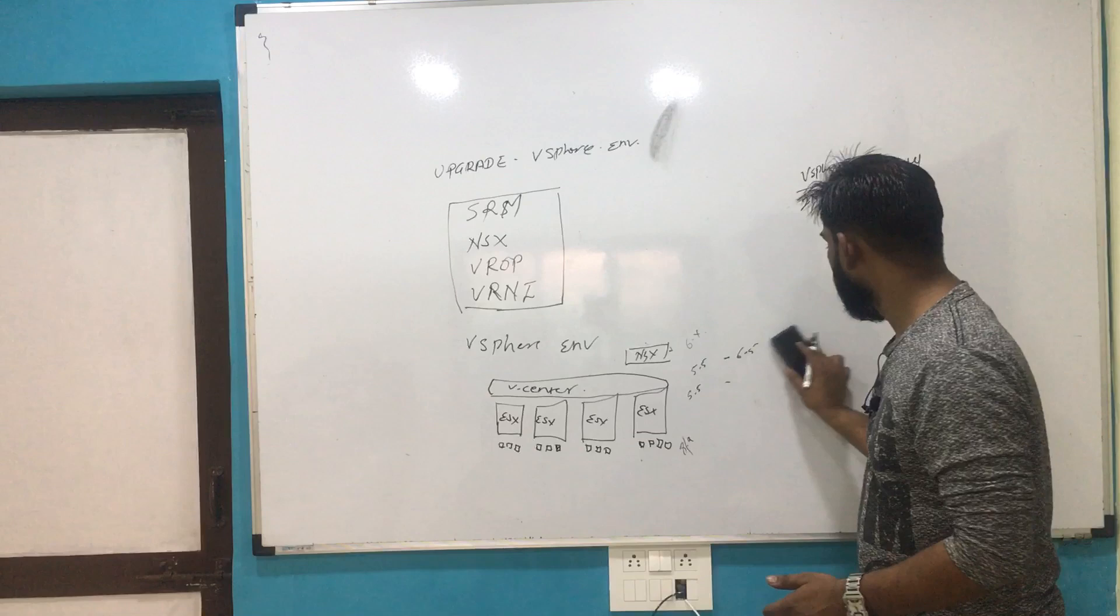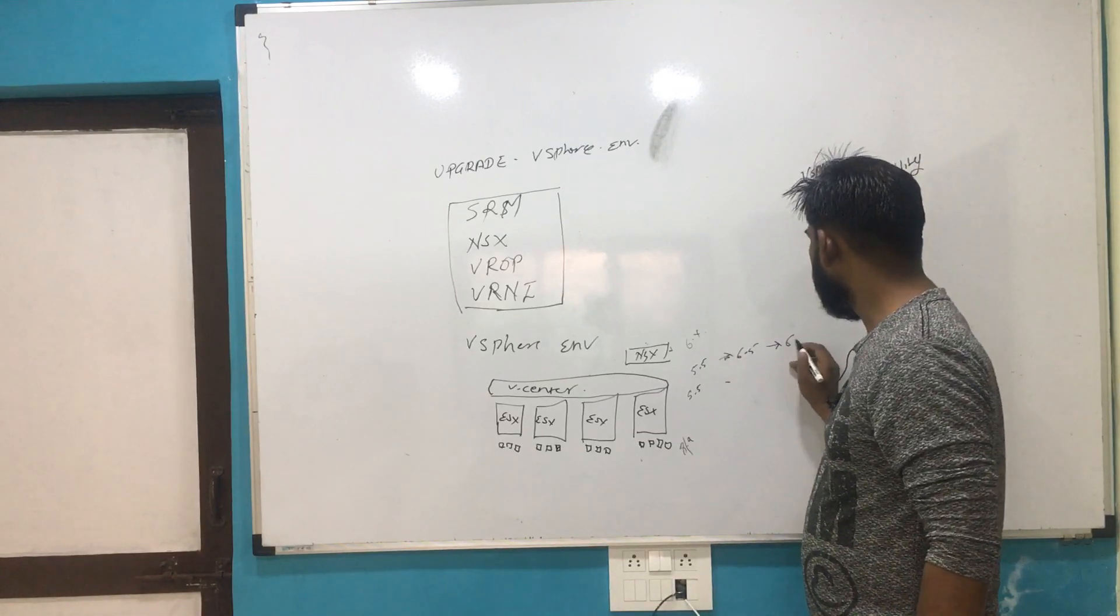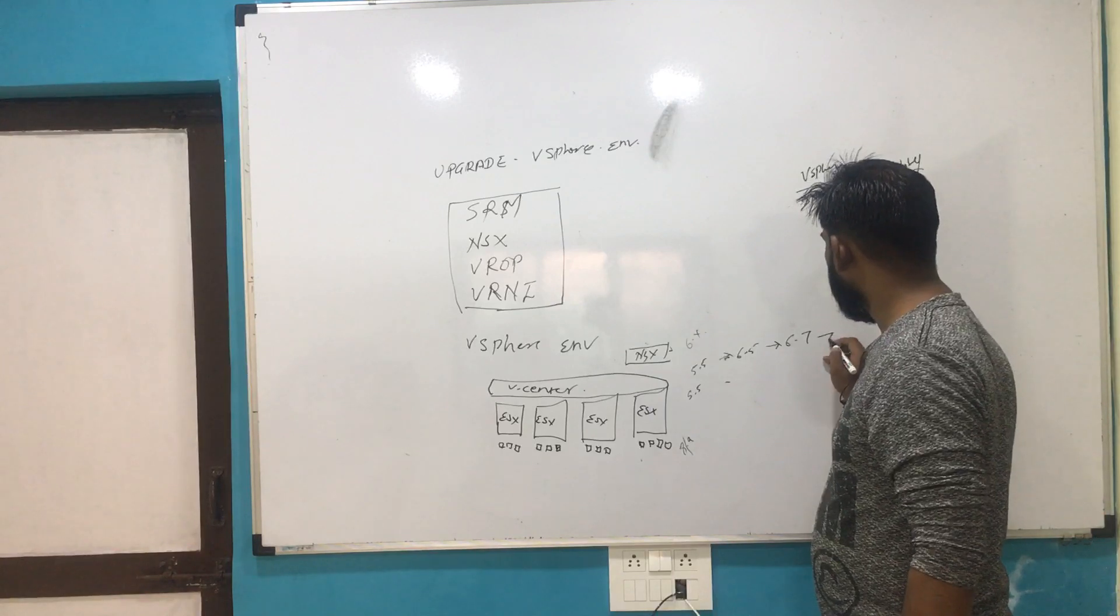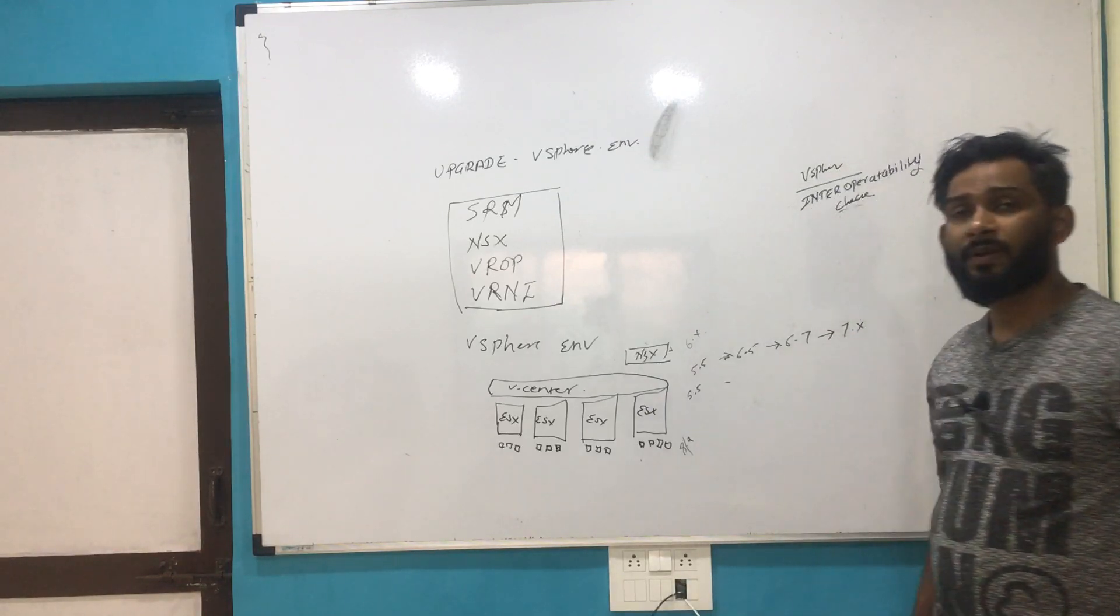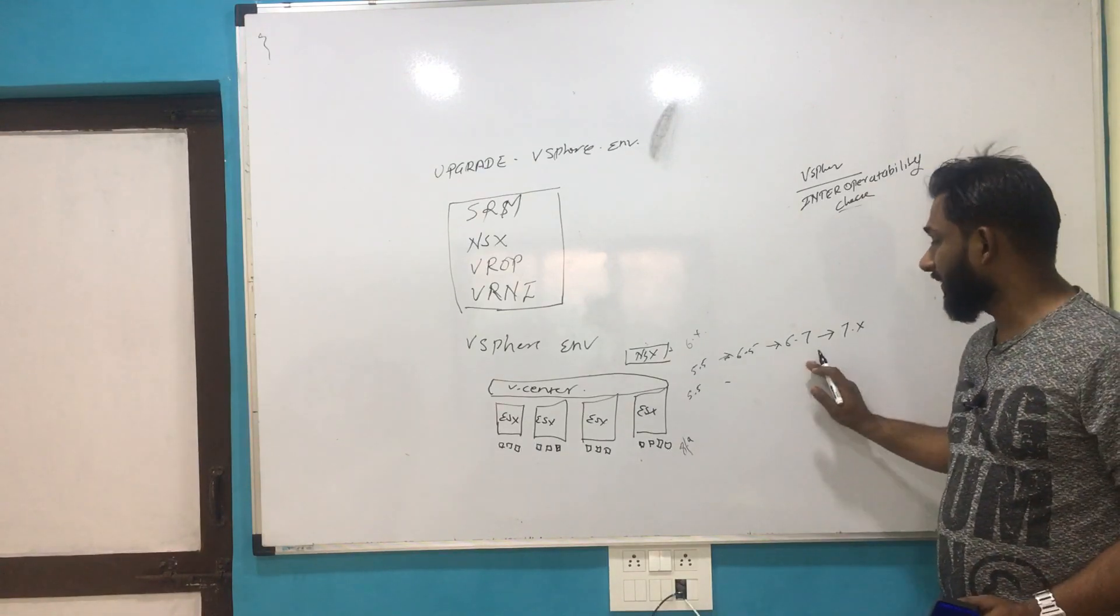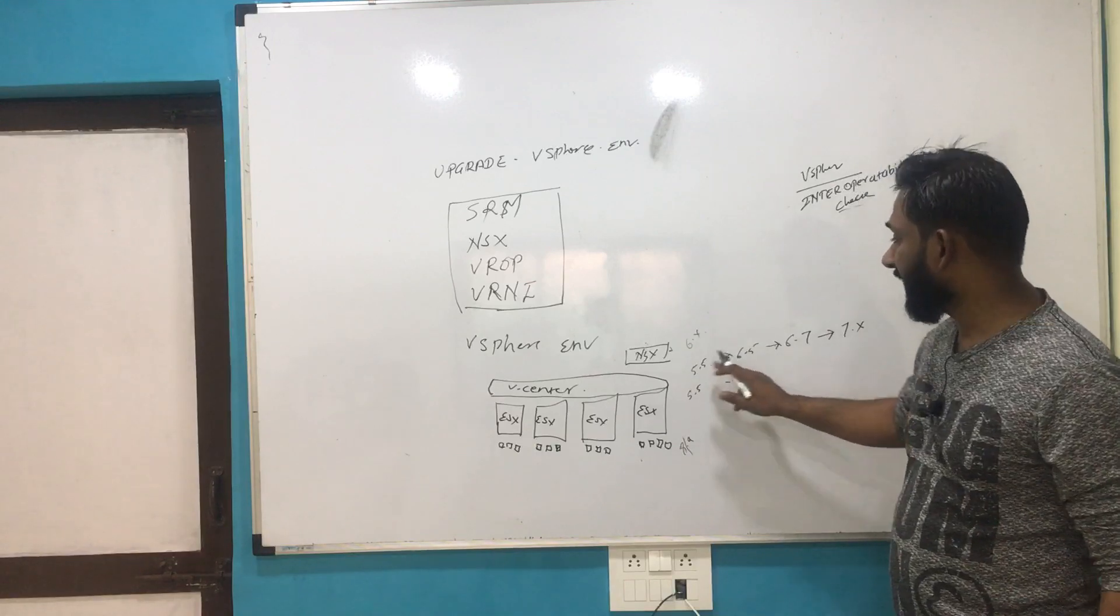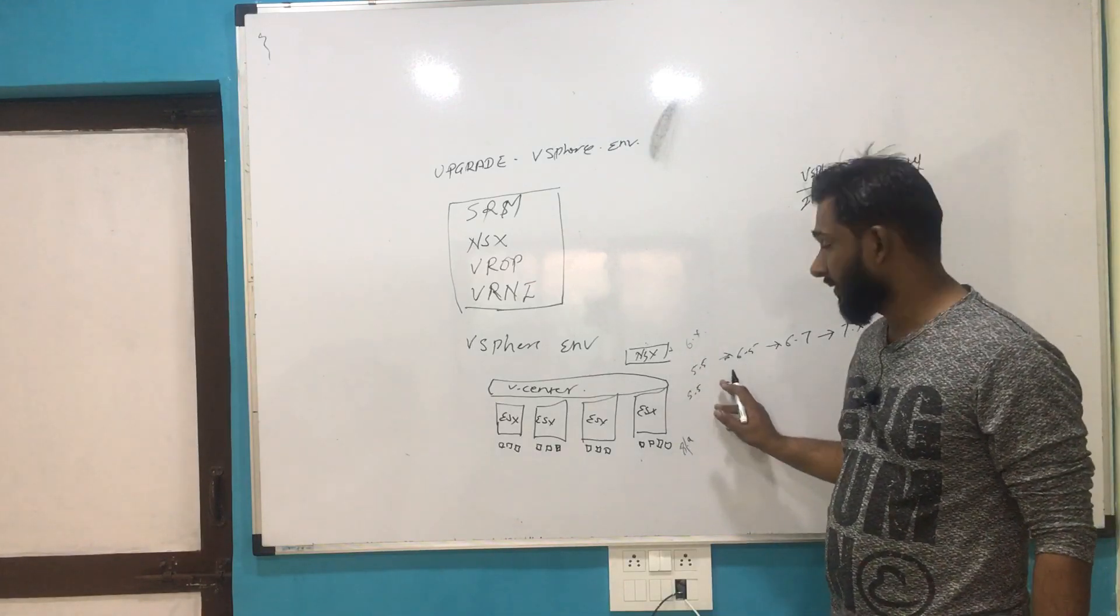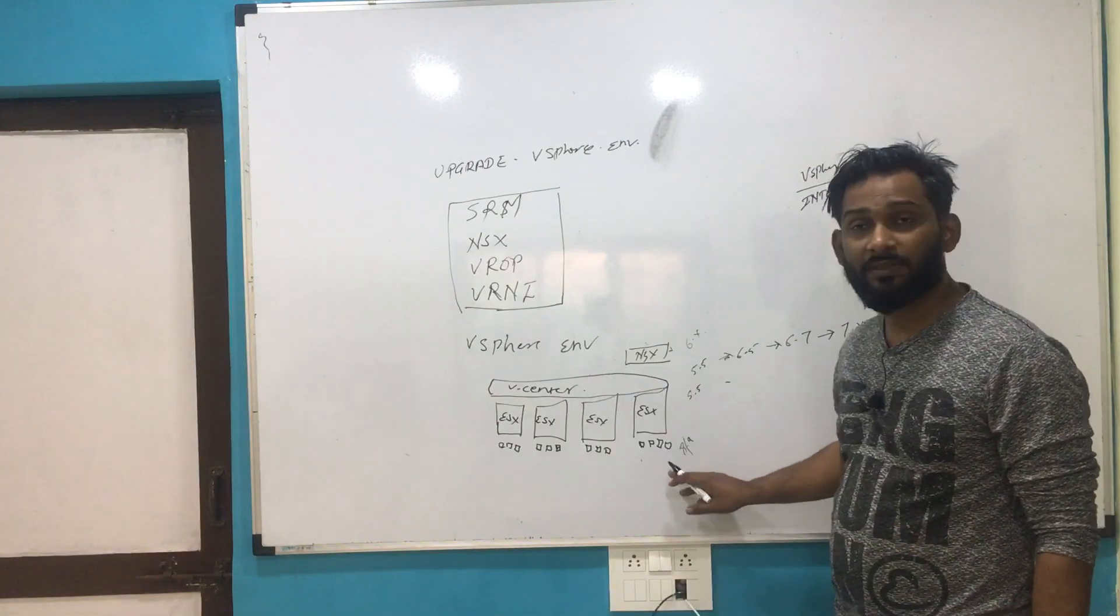If you want to go from 5.5 to 6.5, or from 6.5 to 6.7 or 7.0, this upgrade activity will affect compatibility. If you go from 5.5 to 6.5 and your NSX is not compatible, your network will collapse and virtual machines will lose network connectivity.